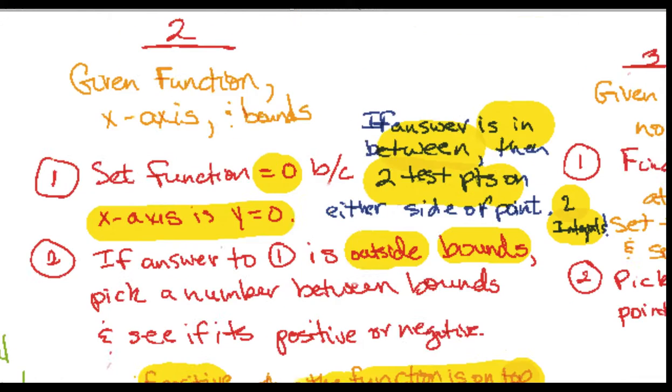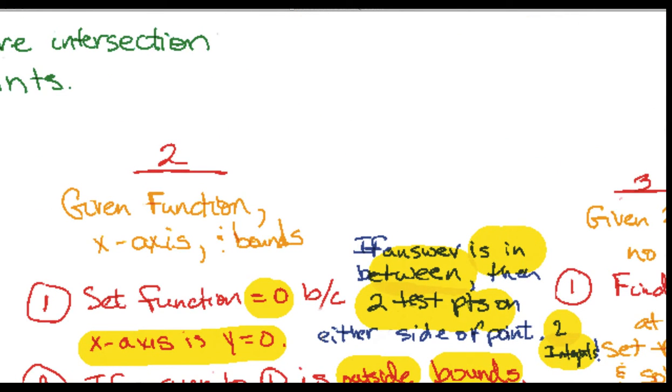So x-axis would be on top in scenario two and vice versa in scenario one. That's only if the intersection point with the x-axis or when you set it equal to zero is outside the range we're looking for.